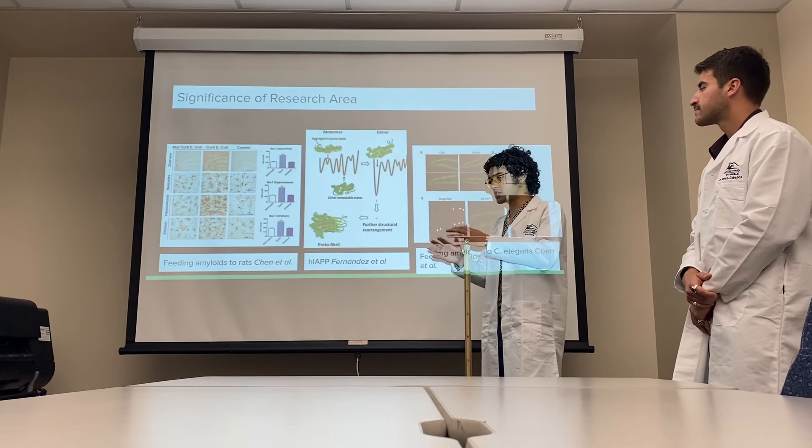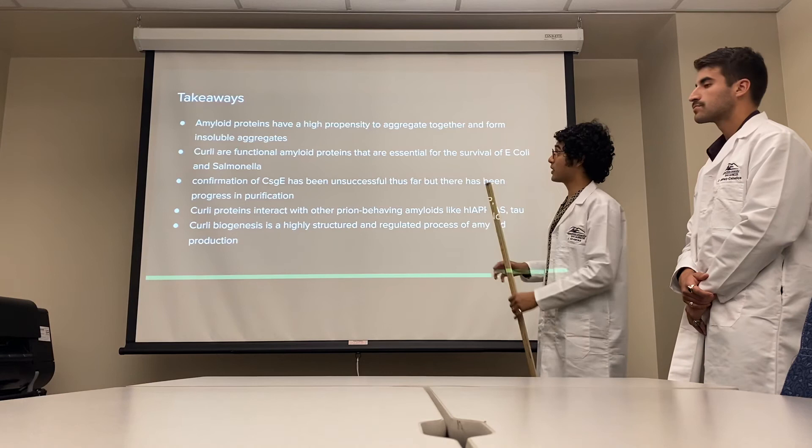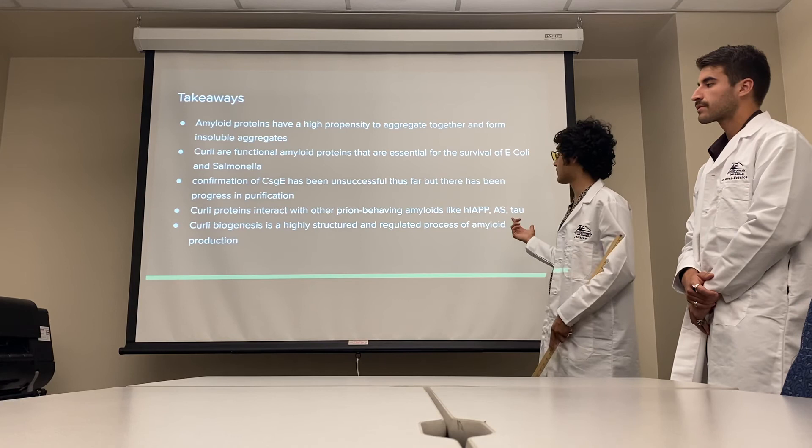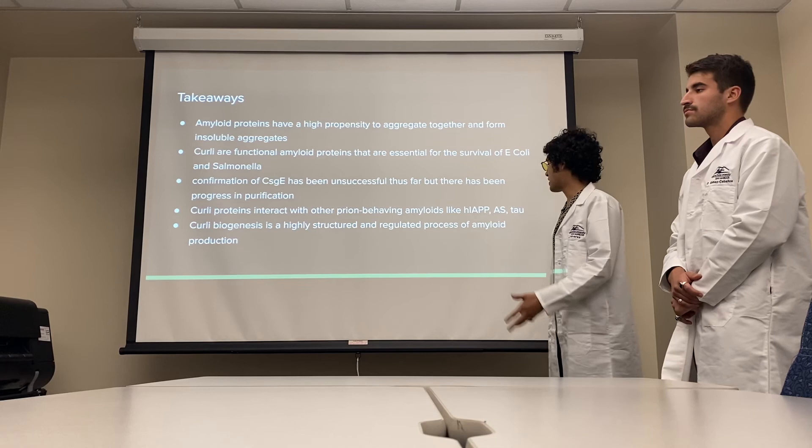We understand that Alzheimer's and related amyloid diseases are holistic diseases, and that amyloids may be a contributing factor. Some quick takeaways: amyloid proteins have a high propensity to aggregate and form insoluble aggregates; curli are functional amyloid proteins essential to the survival of E. coli and Salmonella; confirmation of CSGE has been unsuccessful thus far but there has been progress in purification; curli proteins interact with other amyloid proteins like human IAPP and tau; and curli biogenesis is a highly structured and regulated process that can be learned from.